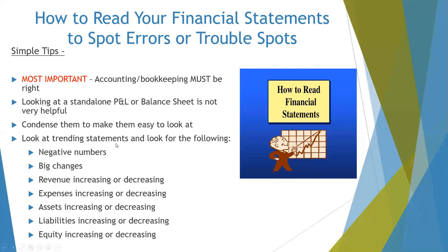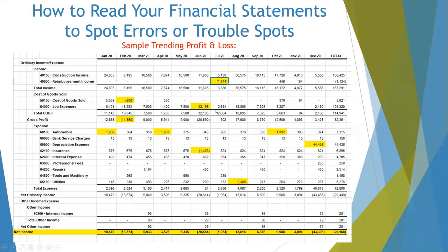You want to look at trending statements to look for negative numbers, big changes, and whether revenue, expenses, assets, liabilities, and equity are increasing or decreasing. Here I've pulled up a trending profit and loss statement for every month of 2020 — trending could be multiple years, multiple months, or multiple quarters. What you can do is compare the numbers month to month or year to year to spot potential errors or trouble spots, such as expenses getting too high. I've highlighted some examples: a negative reimbursement income — your income should not be negative, so we'd need to dig into that and fix it.